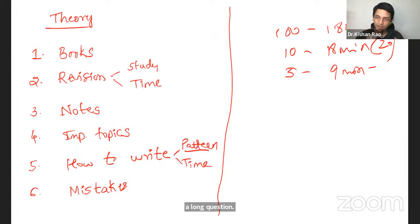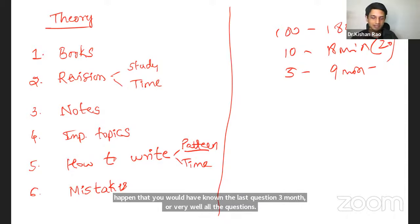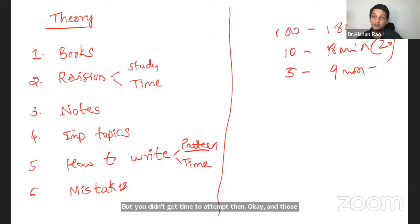And you keep on writing, writing, writing. And, how much are you, right? You'll get maximum seven or eight marks. And it will so happen that you would have known the last question three marker very well, all the questions, but you didn't get time to attempt them. And those are the mark fetching one. And you are not able to attempt them. That will be a big blunder. So should not happen like that. So you should have enough time equally spaced for all the questions. And you should be able to attempt all the questions. So manage the time wisely.